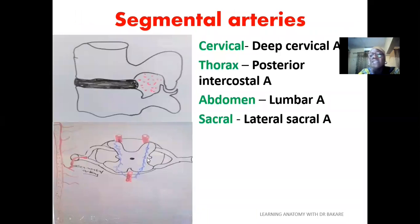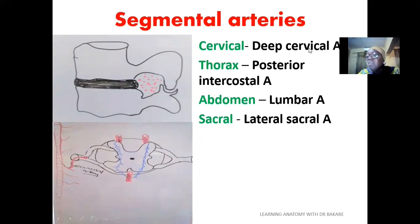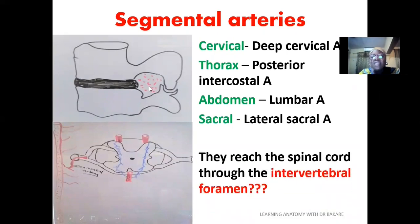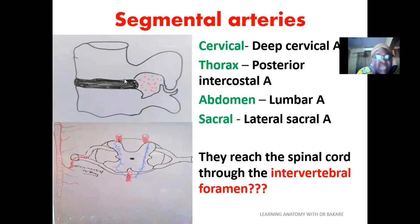Then we have the segmental artery. As the spinal cord runs downward, it is also fed by branches from the aorta depending on the region. For the cervical region, we have the deep cervical artery, which is a branch of the costocervical trunk supplying the deep muscles of the neck, and it also supplies the spinal cord in that region. Then we have the posterior intercostal artery, which is a branch of the thoracic aorta, and the lumbar artery from the abdominal aorta, and also the lateral sacral artery. These arteries, before reaching the spinal cord within the vertebral canal, pass through the intervertebral foramen — a space between two vertebrae — to penetrate into the vertebral canal.